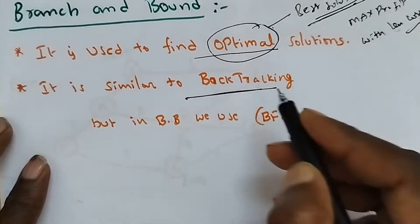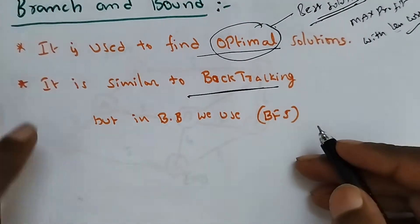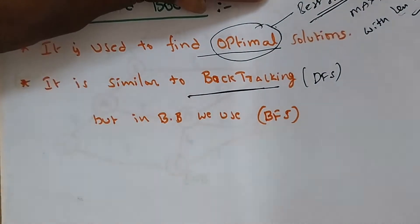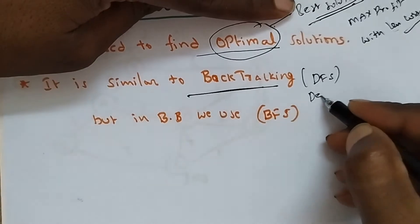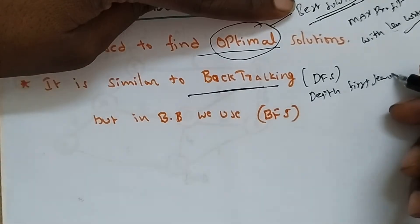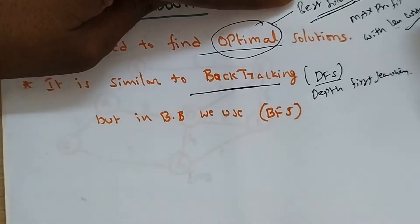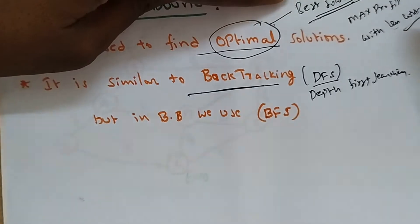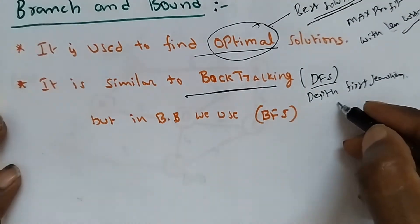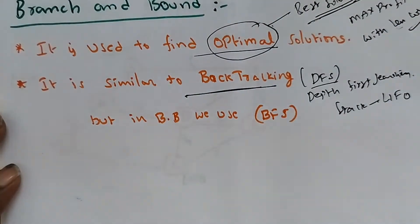Branch and bound is similar to backtracking, but there is a difference. In backtracking, we use DFS technology — depth first search. DFS is an edge-based technique and it uses a stack, which is the LIFO method.